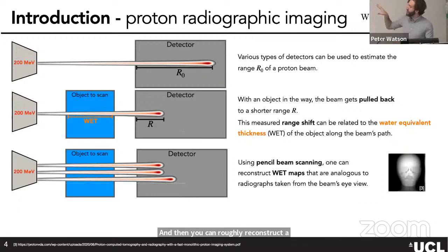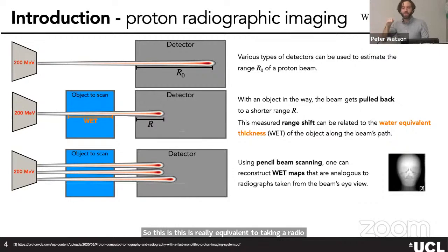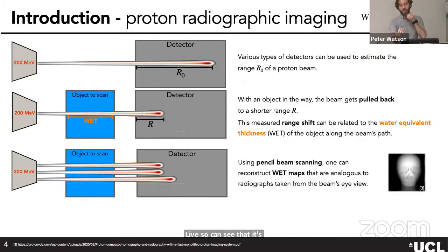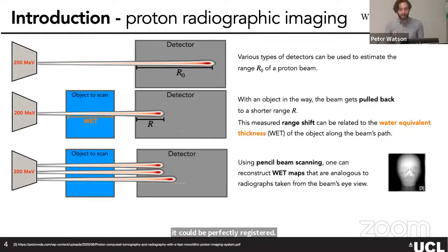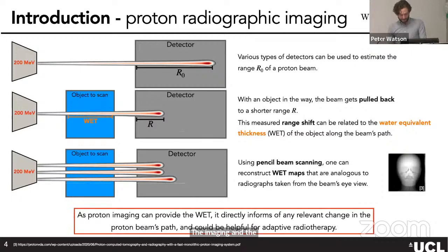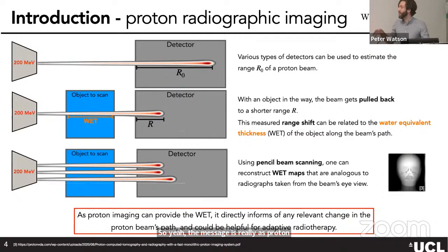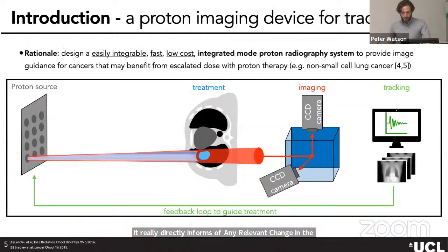To do imaging from this idea, you use a pencil beam scanning setup — instead of shooting one beam, you shoot many beams at different X-Y positions sequentially. You get an estimate of the WET at each point the beam enters the patient, and you can reconstruct a coarse WET map. This is equivalent to taking a radiograph of your patient with protons from the beam side, perfectly registered to the treatment.